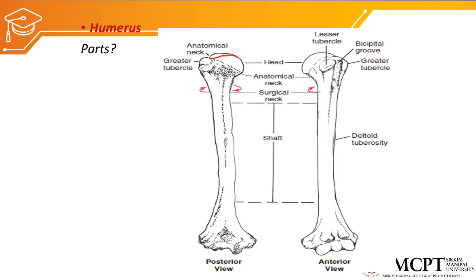The humerus has a head which is superior, and it has an anatomical neck. Just beside the anatomical neck it has a greater tubercle and lesser tubercle. Between the lesser and greater tubercle we have the bicipital groove, also called the intertubercular sulcus. Below here we have the deltoid tuberosity where the deltoid muscle gets inserted. In the distal part we have a medial epicondyle and a lateral epicondyle, and we have trochlea and capitulum. This area bilaterally is called the supracondylar ridge.